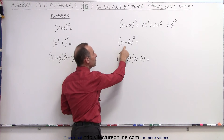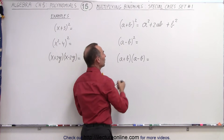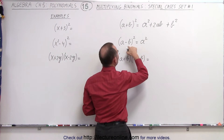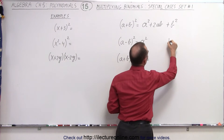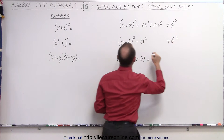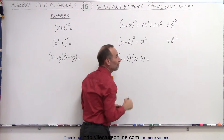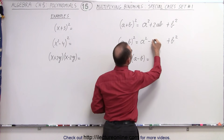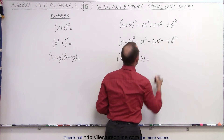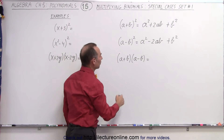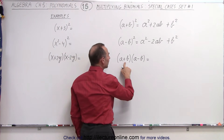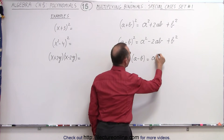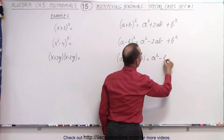It's exactly the same for a minus b. Again, we take the first term squared, the last term squared — minus b times minus b is plus b squared. And then the product: a times negative b is negative ab, times 2 gives you negative 2ab. And if we multiply a plus b times a minus b, the result is the first term squared minus the last term squared.